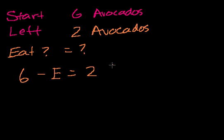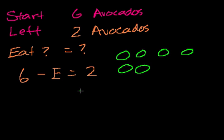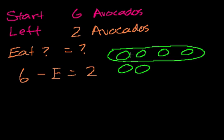I'll draw them in green. One, two, three, four, five, six. So how many do I have to eat? How many do I have to take away to be left with two? Let's say these are the two that I'm left with, so I would have to take away these four. So essentially, that person would have eaten four avocados.